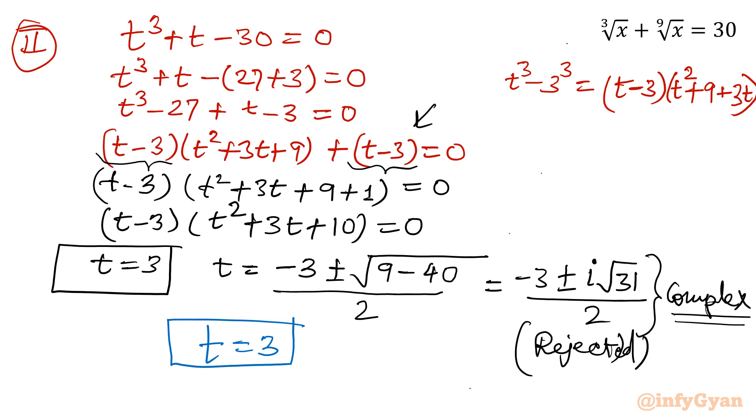Now what is the value of t? What we initially substituted? That is x is equal to t power 9. So the value of x would be 3 power 9. Now only we have to check the answer or verification. What was our substitution? x is equal to t power 9. So once you calculate t, that is 3, we will substitute here. So it is coming out 3 raised to the power 9. Let us verify this value.